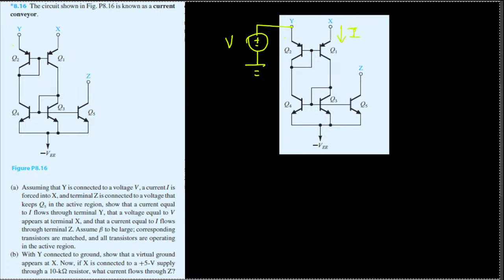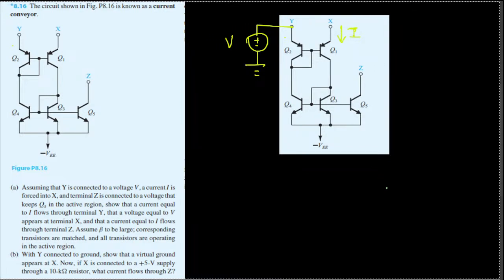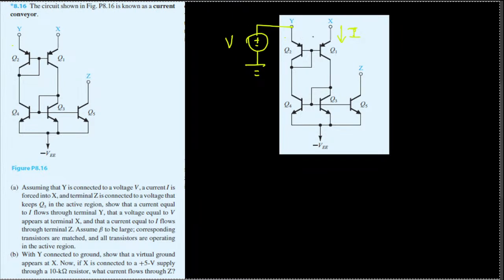This yellow color is not very visible but I don't have any other choice. This is the current flow, this is the voltage. If we name this according to the diagram, we have the current flow here.